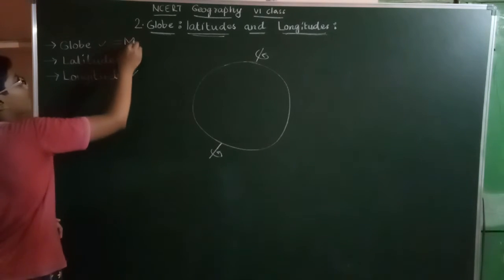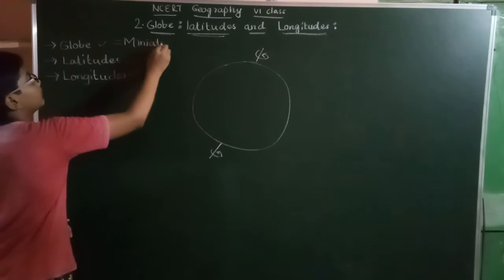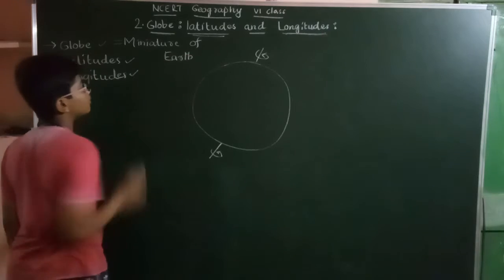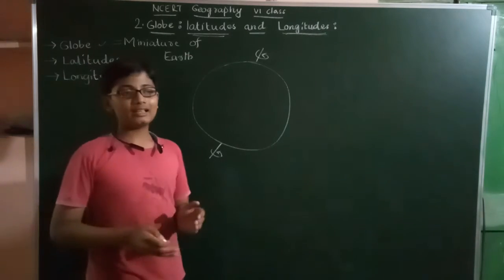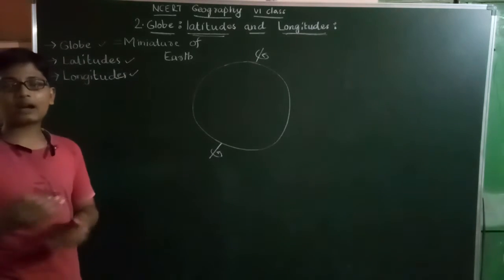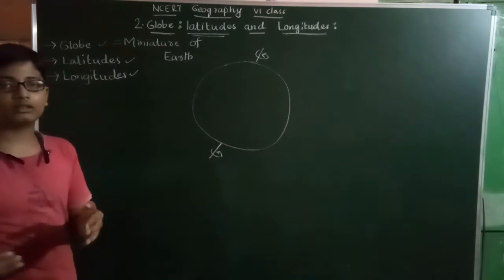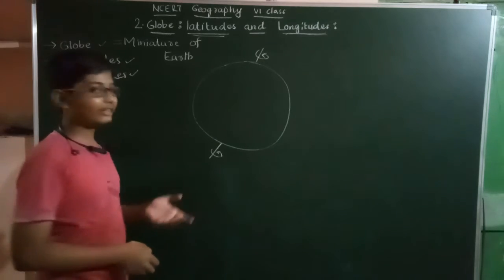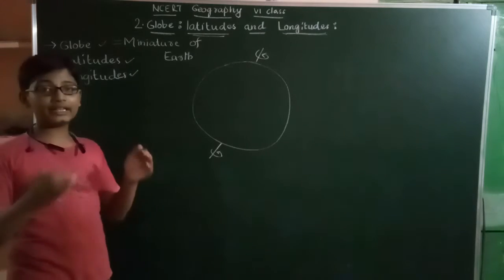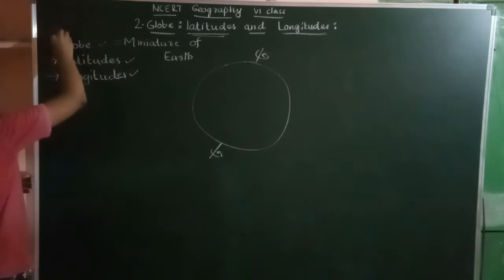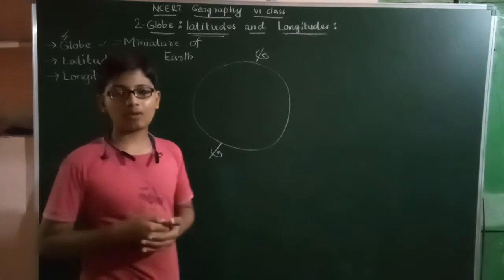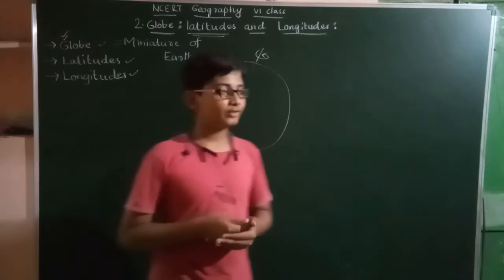Globe is called as Miniature of Earth. Globe is the smaller representation of the Earth. Now, Earth is very vast. We can't represent it and we can't know the places which are on the globe. So, for knowing what places are at which location on the Earth, we need a miniature — that is a Globe — a smaller representation of the Earth.